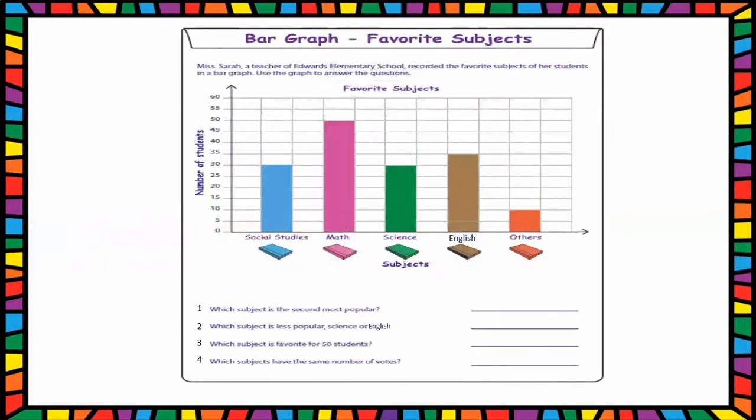This is a bar graph. Miss Sarah, a teacher of Edwards Elementary School, recorded the favorite subjects of her students in a bar graph. Use the graph to answer the questions. Vertically, number of students are represented. Horizontally, subjects are written: social studies, math, science, English, and other subjects. One unit represents five students, two units means ten students.